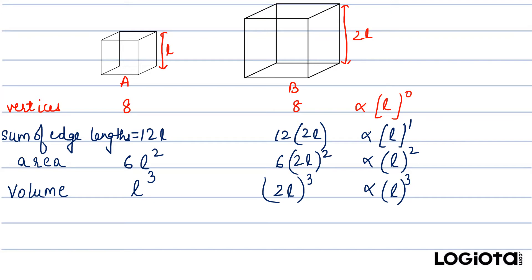Similar is the case for the order of reactions. If the rate of the reaction doesn't depend upon the reactant concentration, then we say that it is 0 order — it is raised to power 0. If it is directly proportional to the reactant concentration, then we say that it is first order. If it is proportional to the square of the reactant concentration, then we say that it is second order, and similarly for third order. We can easily predict the order of the reaction with respect to the reactant by looking at the rate.